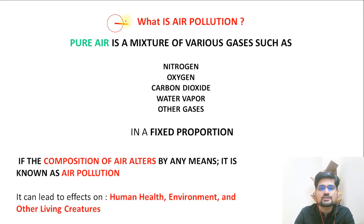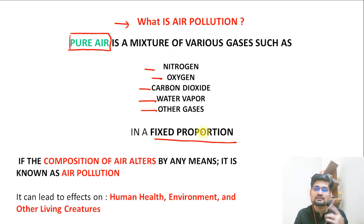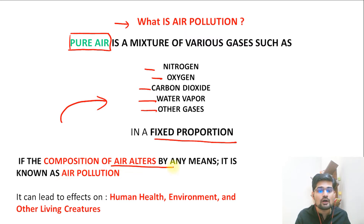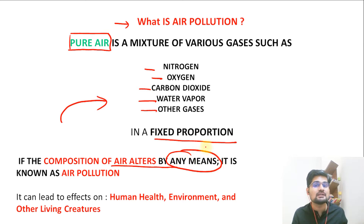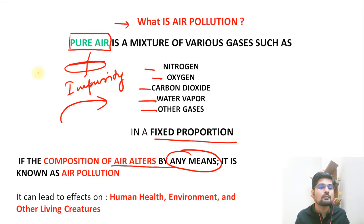When we see this air pollution question of what it is - remember when there is pure air in its natural state, we say it is nitrogen, oxygen, carbon dioxide, water vapor and other gases, that is aerosol. It is in a fixed proportion. When this purity is mixed with impurity, that is where pollution starts. If the composition of air alters by any means - not necessarily human means, even naturally - it is considered as pollution because purity is now going towards impurity. From pure to impure, that is what we call the process of pollution.